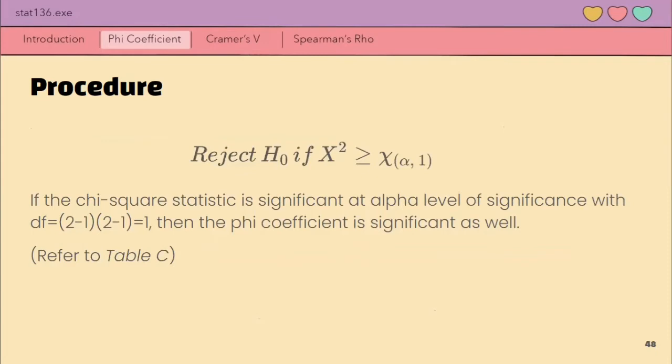Then, to test if this association from the interpretation is significant, we will look at the chi-square statistic X square. Since if significant siya at alpha level of significance, then significant din yung phi coefficient na nakuha natin at that level of significance. So, we reject the null hypothesis if X square is greater than chi square at alpha with degrees of freedom equals to 1. Refer to our table C for this.